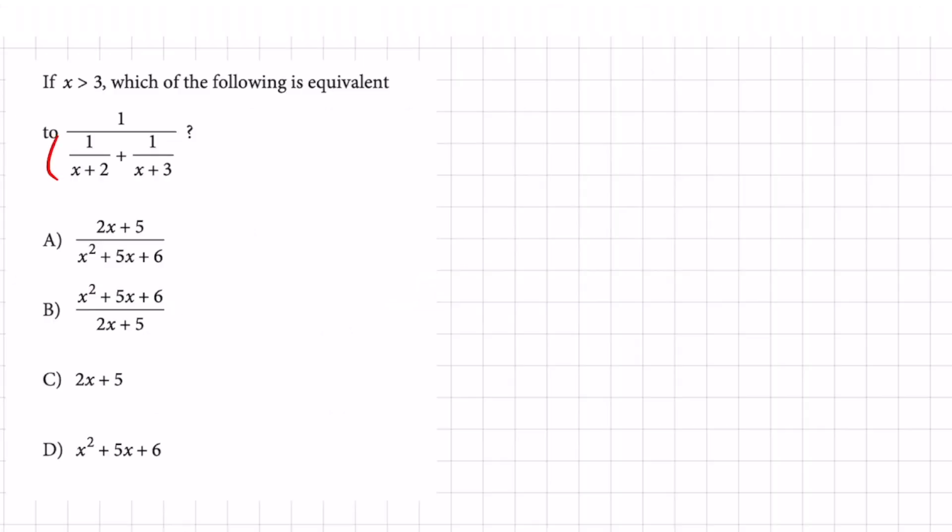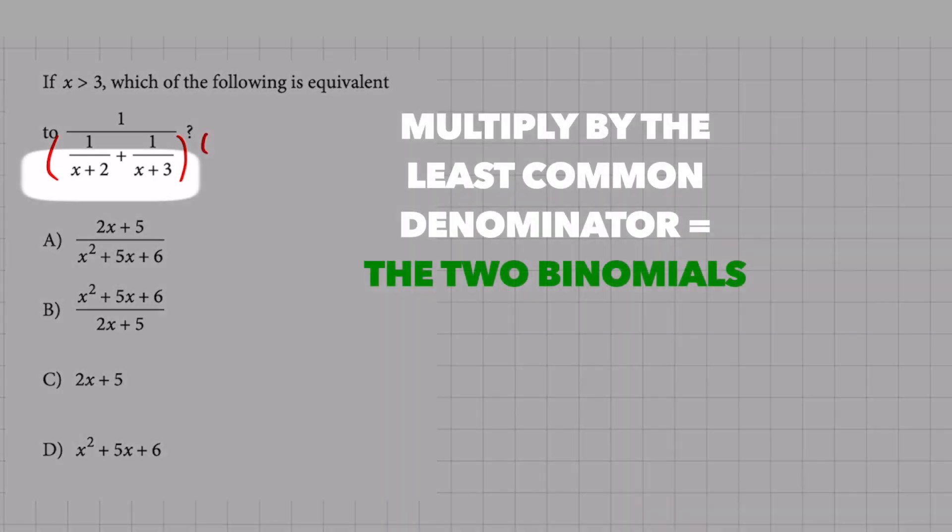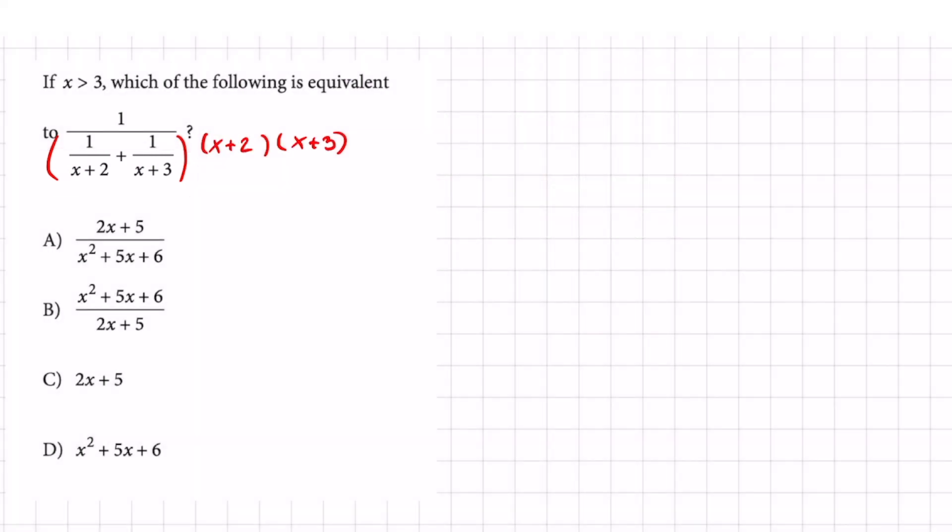Put this in parentheses and we're going to multiply by a common denominator which is made out of the two things that make it a fraction. These two binomials right here, x plus 2 and x plus 3. So I'm going to put those in parentheses just like this.